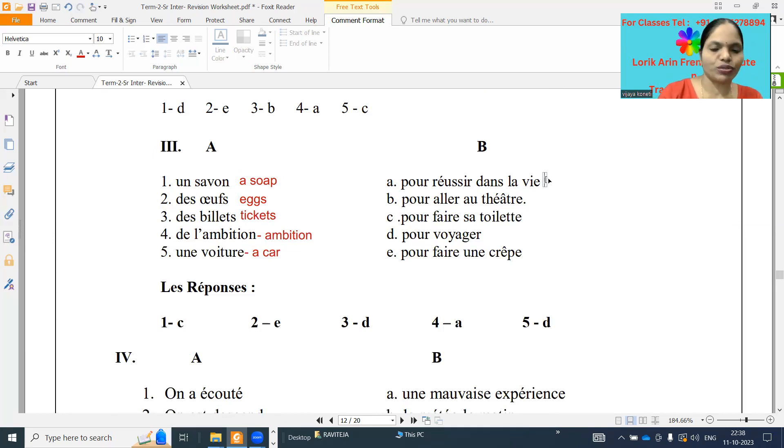Next one, this one, C. Pour réussir dans la vie. For to succeed in the life. And next one, pour aller au théâtre. For to go to the theater. And pour faire sa toilette. For to go to the washroom. Next one, pour voyager. For to travel. And pour faire une crêpe. For to make a pancake.